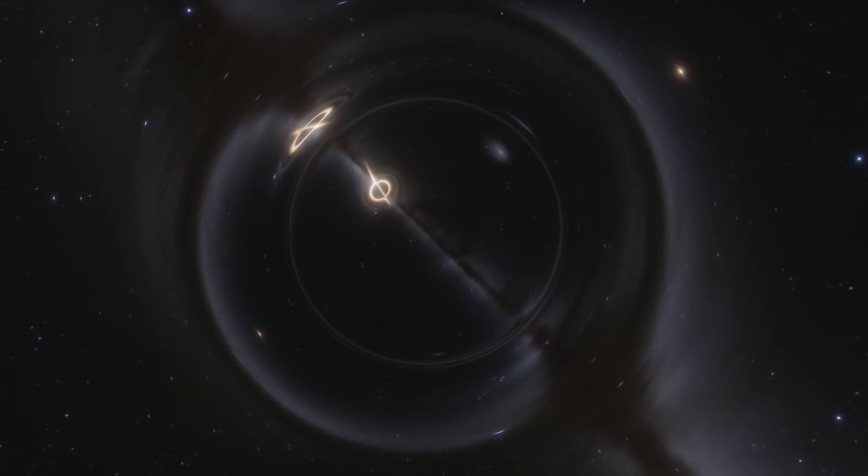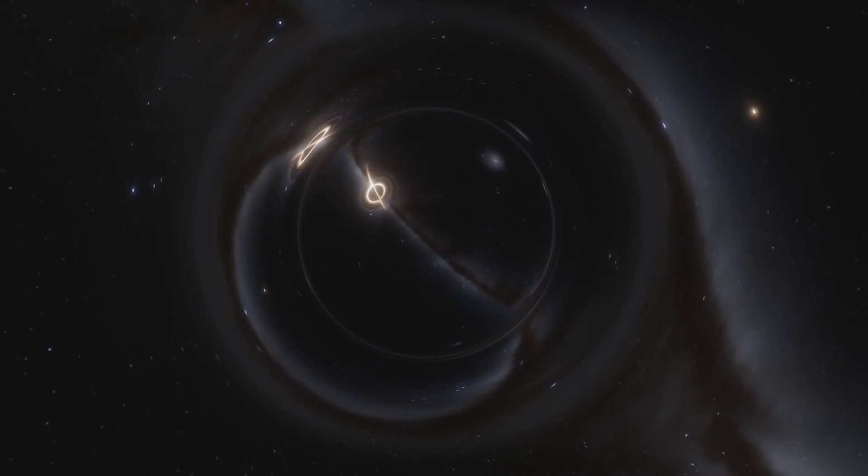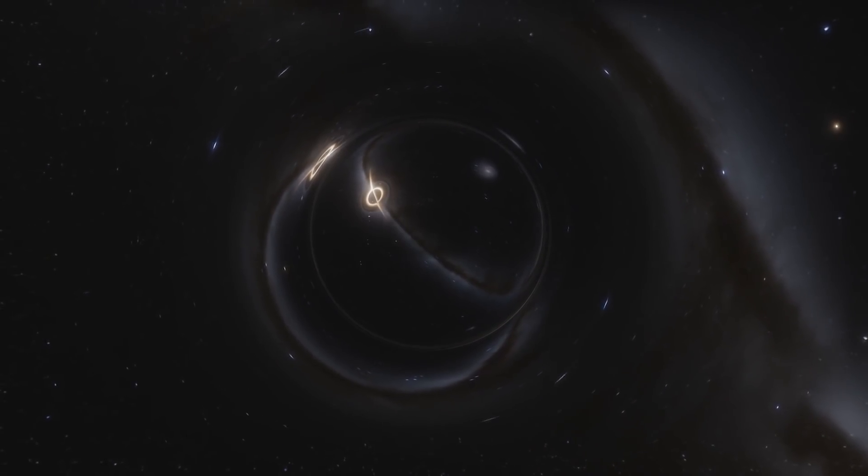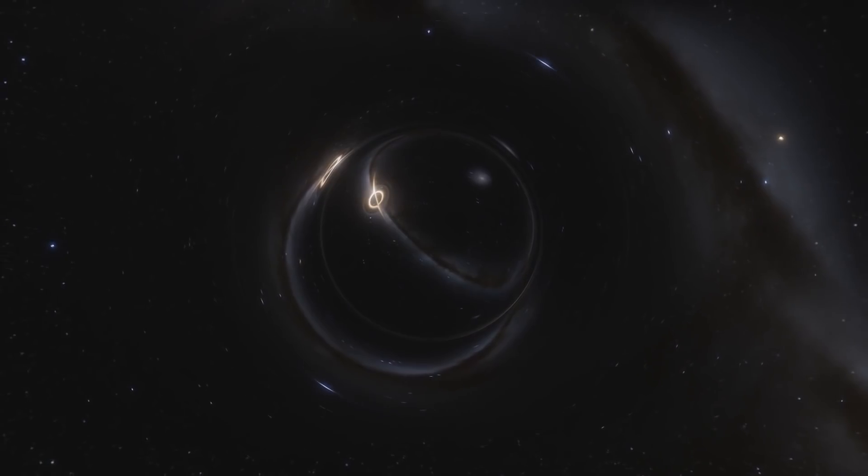Of course, initially many scientists believed that an infinite density was impossible, and that such an occurrence in the math was an obvious flaw, that worked to prove the illegitimacy of general relativity, and that black holes could not possibly exist.